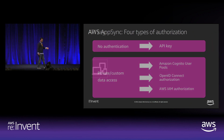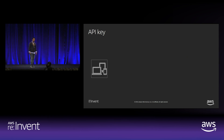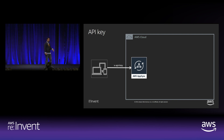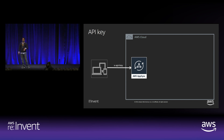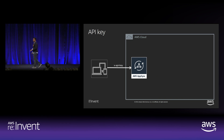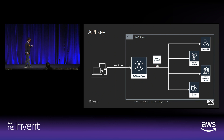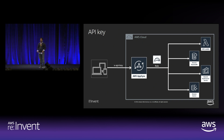In API key mode, the client makes a call to AWS AppSync using the X-API-Key header. That value is specific to an endpoint and has an expiration. AppSync validates whether the API key is scoped to that endpoint and whether it has expired. Once validated, AppSync assumes an application role and makes a call to your downstream data source — which can be Lambda, DynamoDB, Elasticsearch, serverless Aurora Data API, or arbitrary HTTP endpoints.